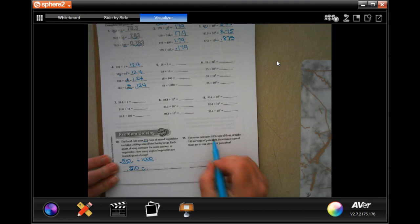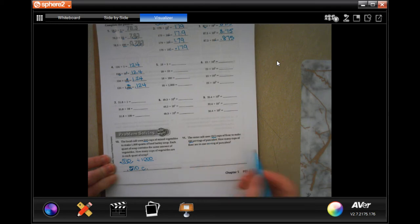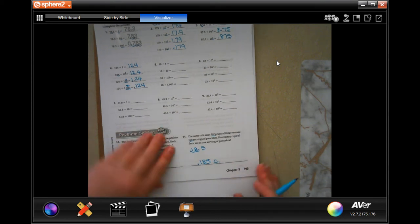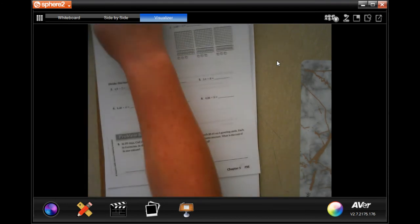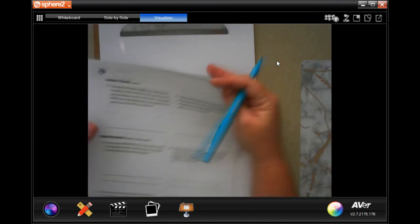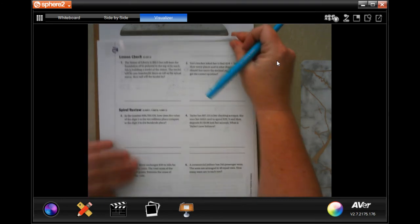The same cafe uses 18.5 cups of flour to make 100 servings. 100 has two zeros in it. We're going to move that twice. How many cups of flour are in one serving? So, again, we're just going to move it those two times. So now you have 18.5, but you have to move the decimal one two times, 0.185 cups. It's pretty easy, guys. Don't make it harder than it's got to be. We're going to go to the back. You guys are going to do the lesson check. You totally can.